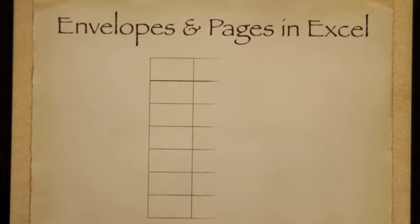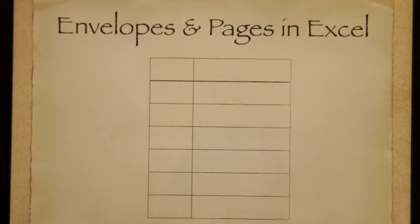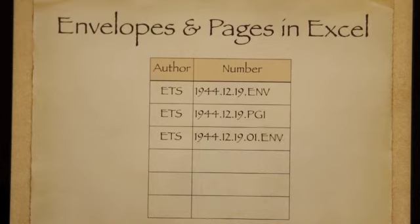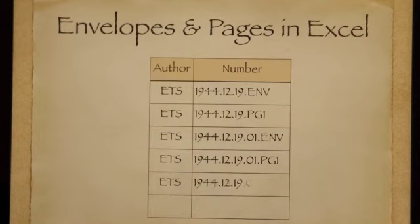Envelopes and pages in Excel will look like this, using the previous example with columns for author and the number that follows. The first letter is an envelope and one piece of paper. The second letter is an envelope and two pieces of paper. And the third letter, on that same day, is a piece of paper without an envelope.